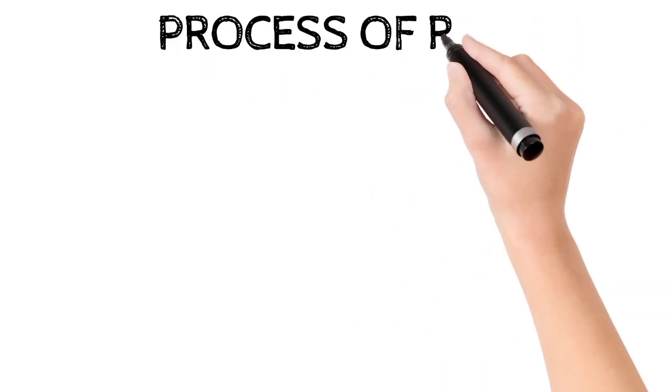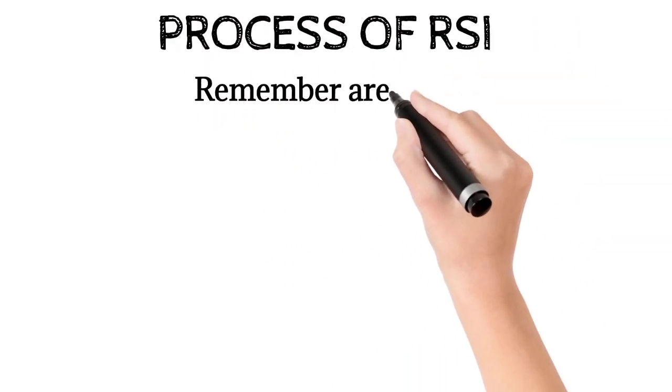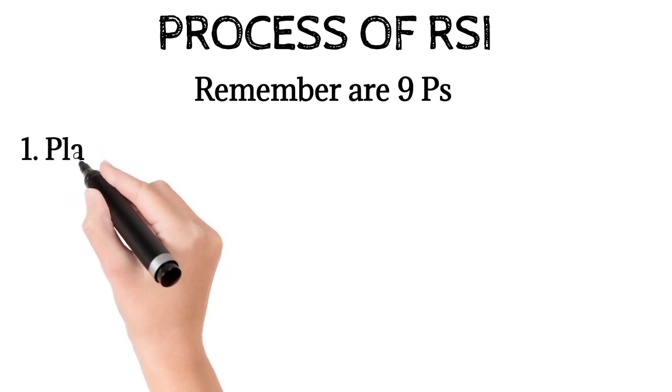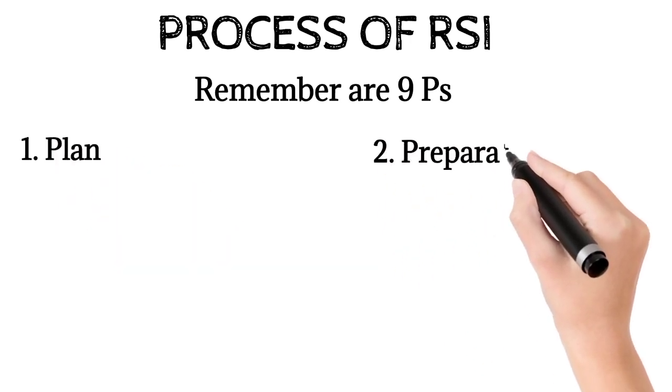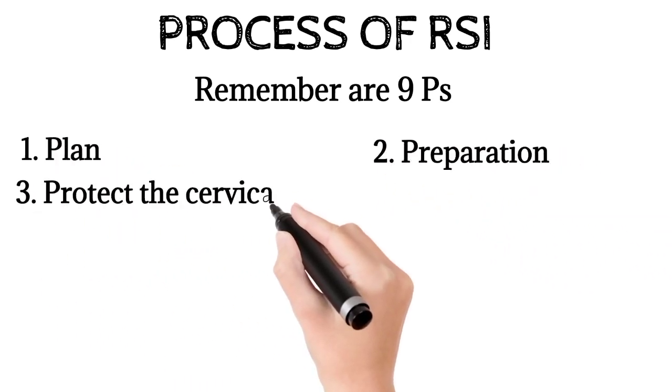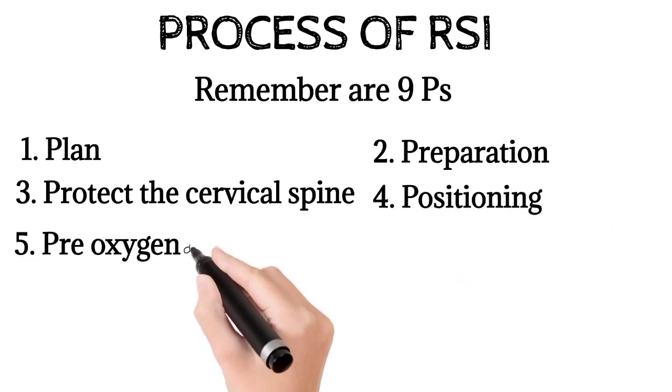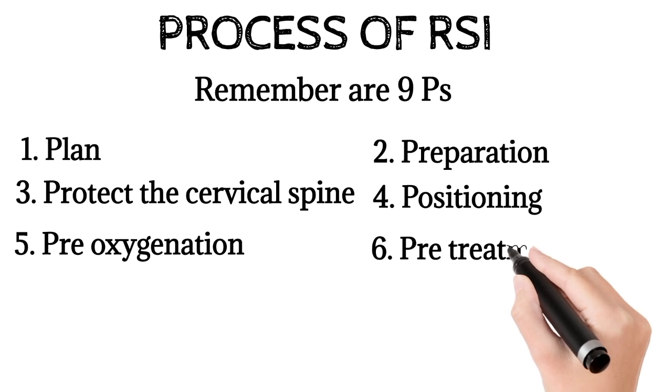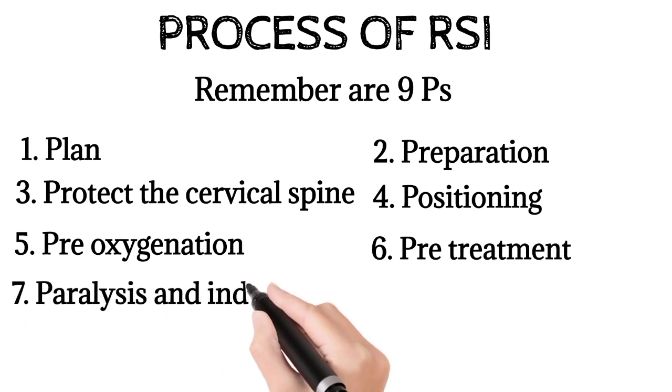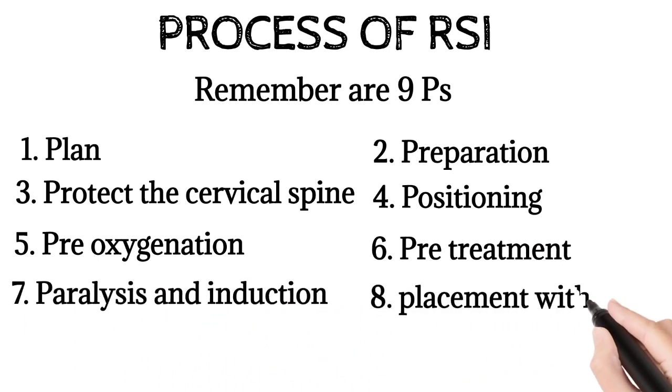Process of Rapid Sequence Induction, remembered as 9 P's: Plan, Preparation of drugs and equipment, Protect the cervical spine, Positioning, Pre-oxygenation, Pre-treatment, Paralysis and induction, Placement with proof, and Post-intubation management.